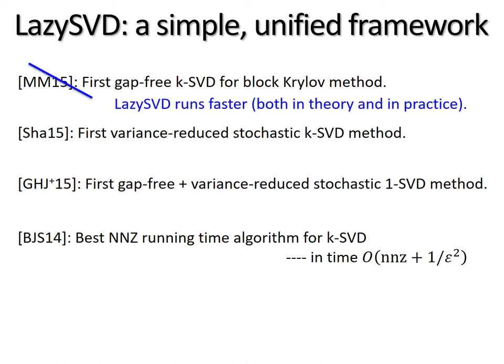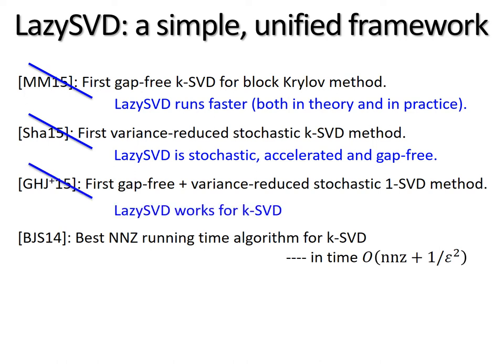For the first one, we get even faster running time. For the second one, we get not only a stochastic method, but also accelerated and gap-free. For the third one, our method works for kSVD, not just one. And for the fourth one, we also obtain this type of running time, but without using the complicated alternative minimization framework that BJS has proposed.